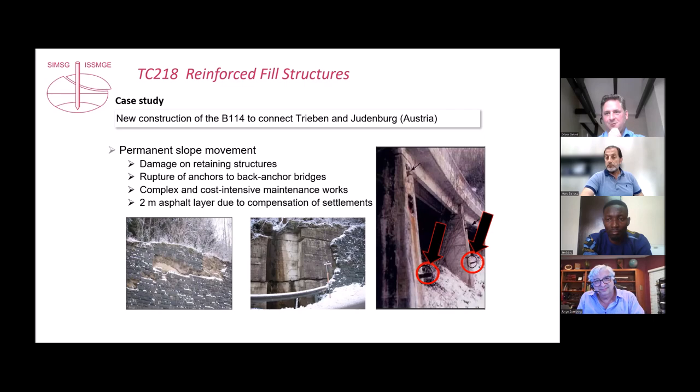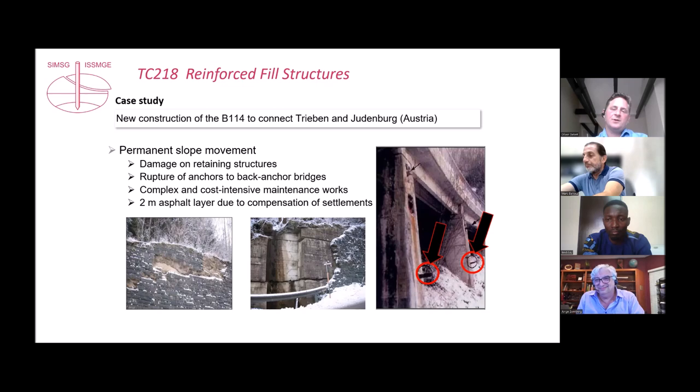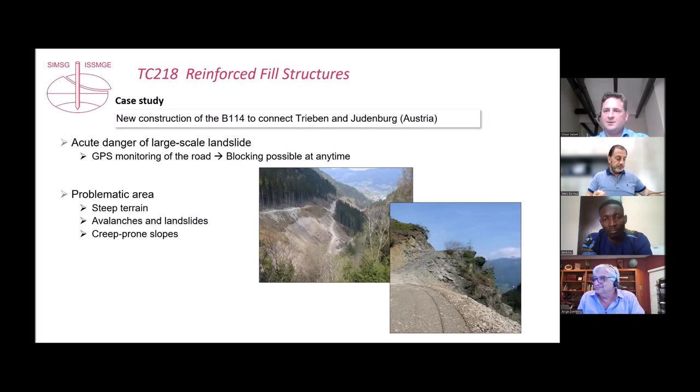This led to major damage on the retaining structures and bridges — they were no longer safe. Constant maintenance was needed; at some sections there ended up being two meters of asphalt. There was also danger of an increase in the speed of movement that could have caused a major collapse.